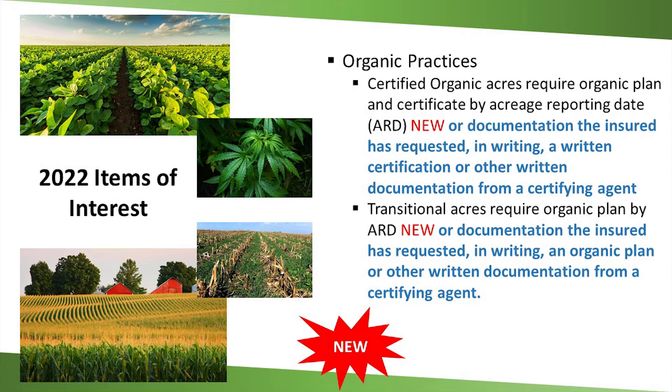Next thing — this affects probably not as many in this room — but for organic practices, certified organic needs to have a plan in place by acreage reporting date. The new thing is now, if you don't have a plan in place but you have documentation showing that you are in the process of trying to get certified, that will be accepted by acreage reporting date. Same with transitional acres — there needs to be a transitional plan in place, or now documentation that you are working with a certifying agent to get that plan in place.